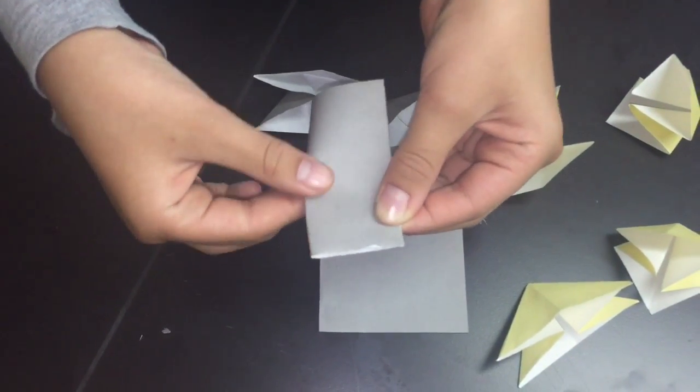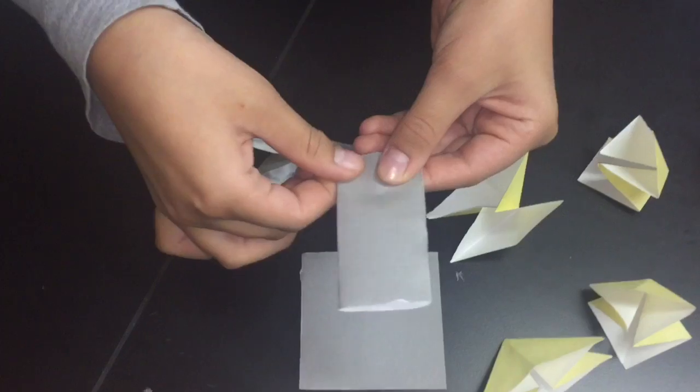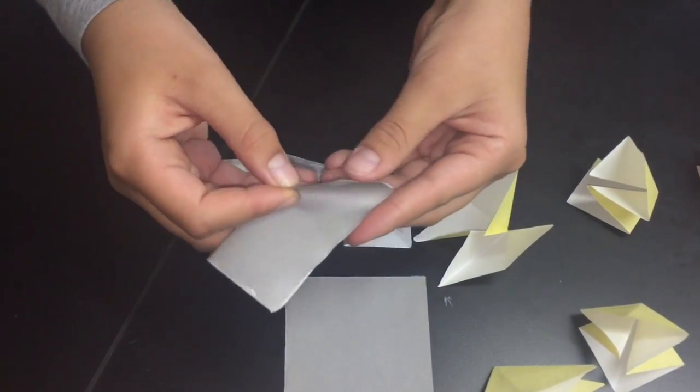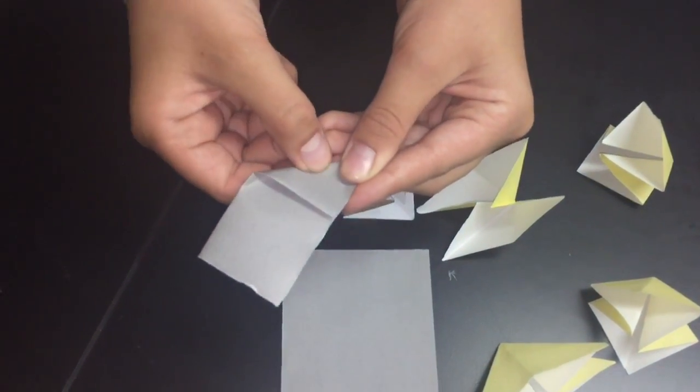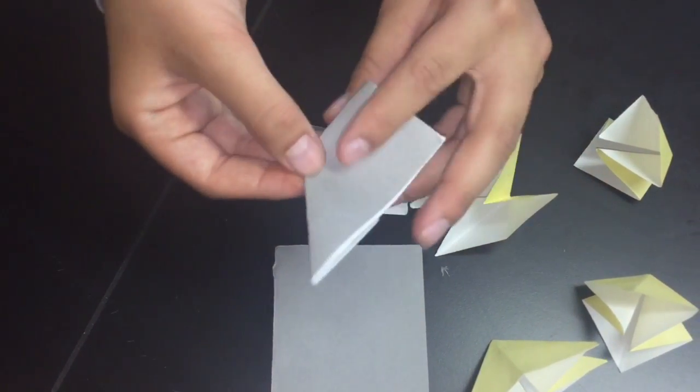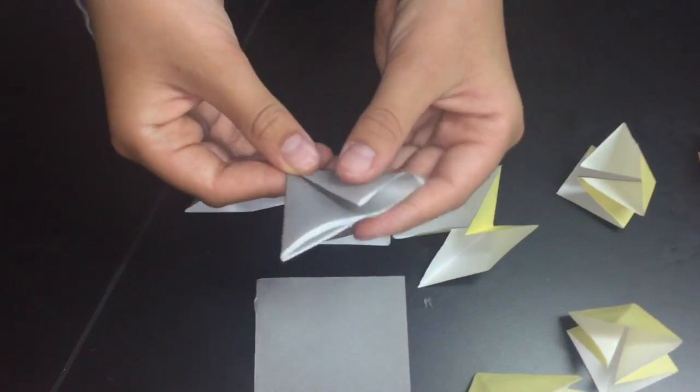The first type, take a piece of paper, fold it in half to make a rectangle. Then flip over the side like you see here, flip it over, and then fold the other side.